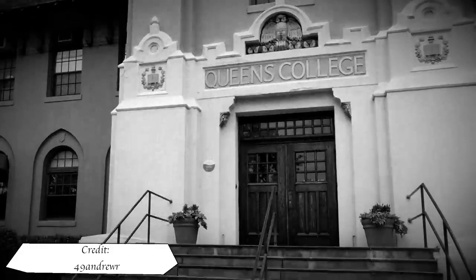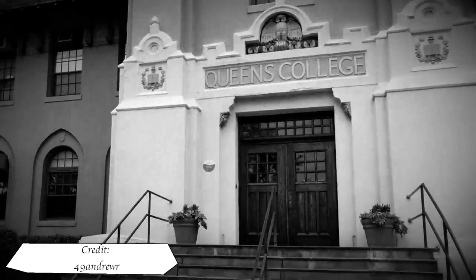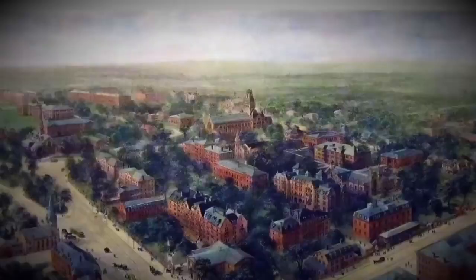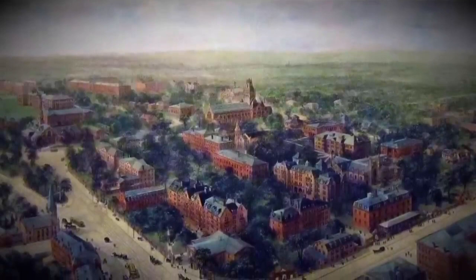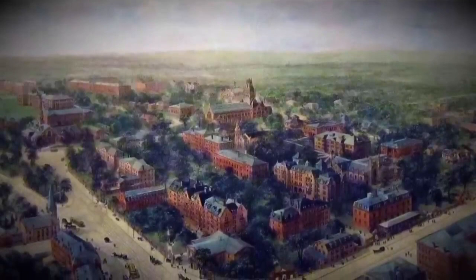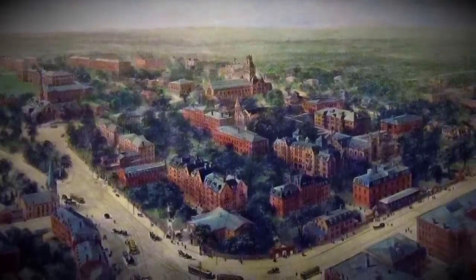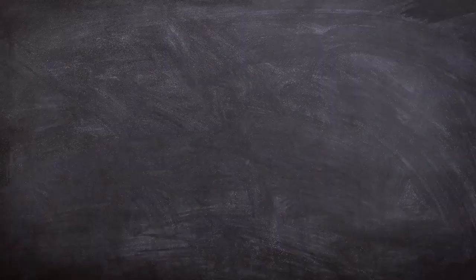In 1954, Milgram received his bachelor's degree in political science from Queens College in New York. Initial applications to Harvard for a psychology master's were rejected but he was eventually admitted. The initial setbacks were due to Milgram not taking any undergraduate courses in psychology at Queens College. In 1961, Milgram received a PhD in social psychology.